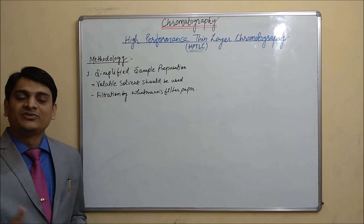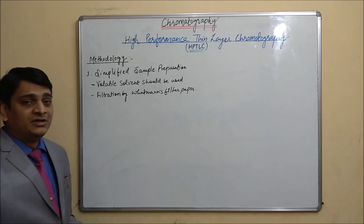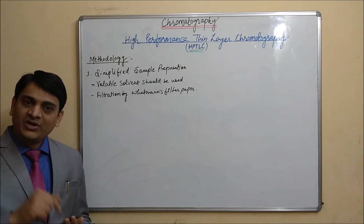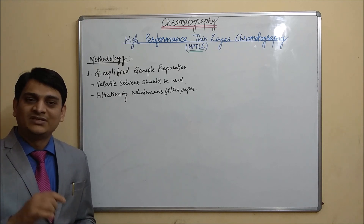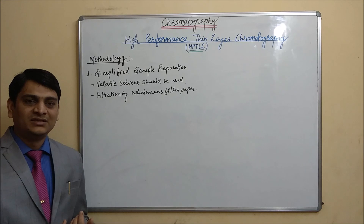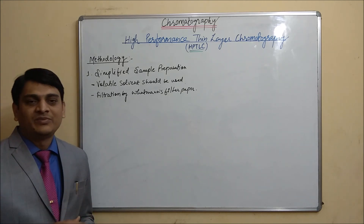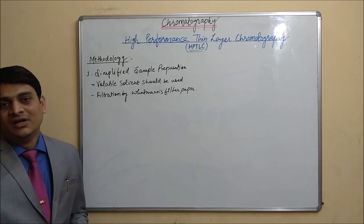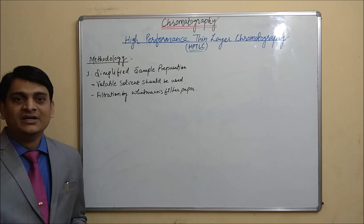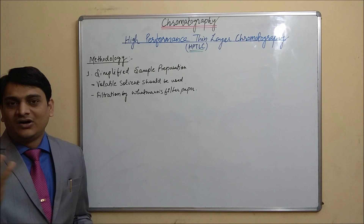The second part is filtration using Whatman filter paper number 1 or Whatman filter paper number 42. If proper solubility of our sample is not there, there may be foreign or insoluble particles present, and those insoluble particles will clog our HPDLC syringe, which is very costly, so we must filter all our samples.